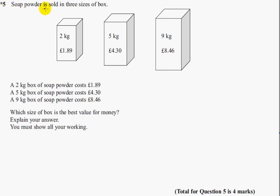Question 5. Soap powder is sold in 3 sizes of box. 2kg for £1.89, 5kg box for £4.30 and 9kg for £8.46. Which size of box is the best value for money? Explain your answer. You must show all your working out.